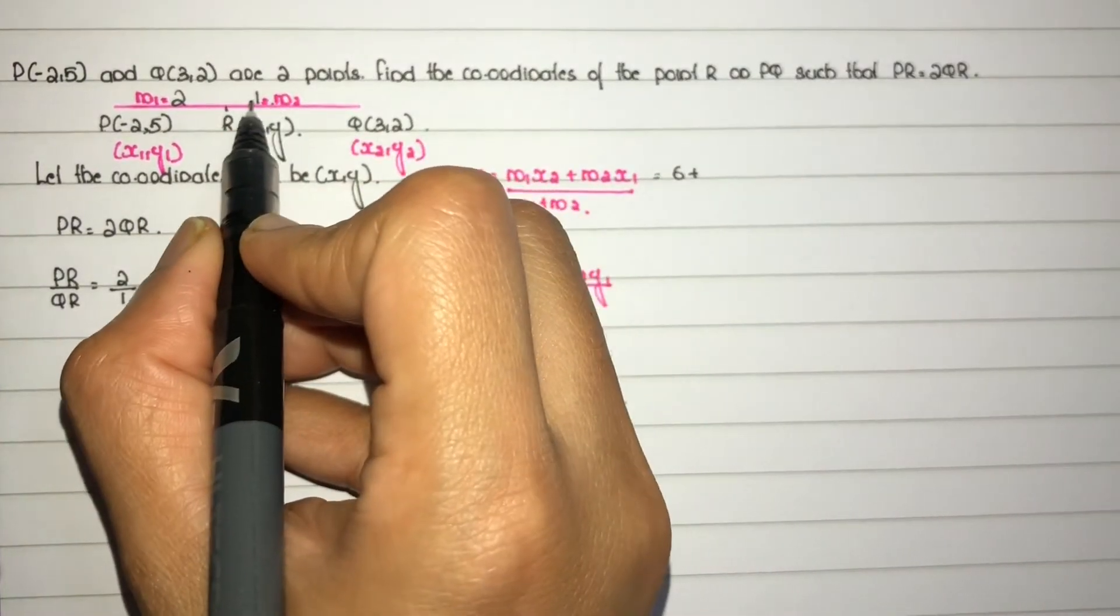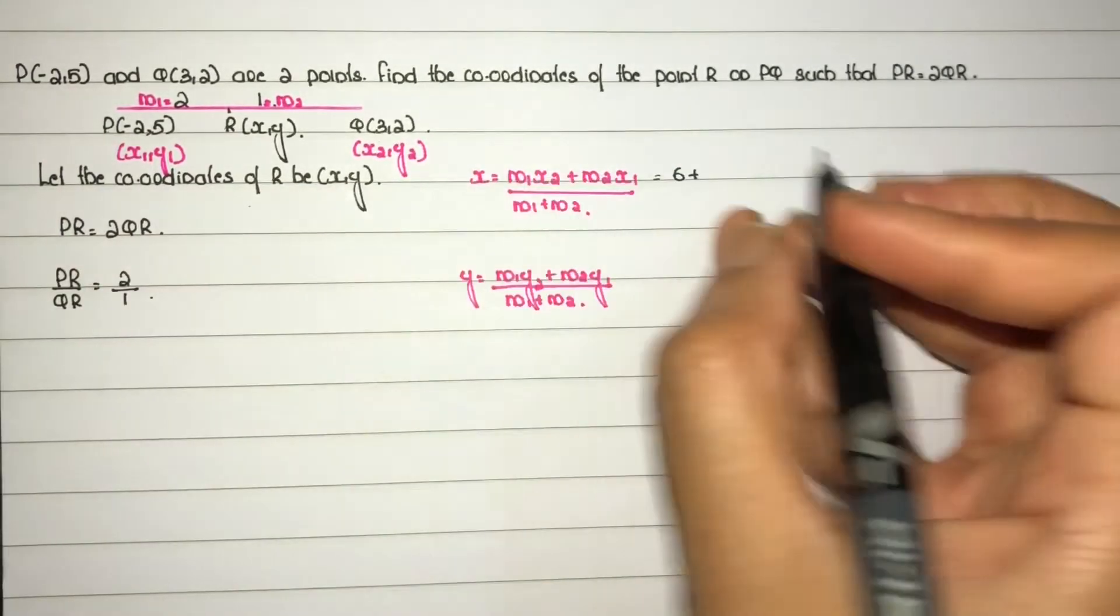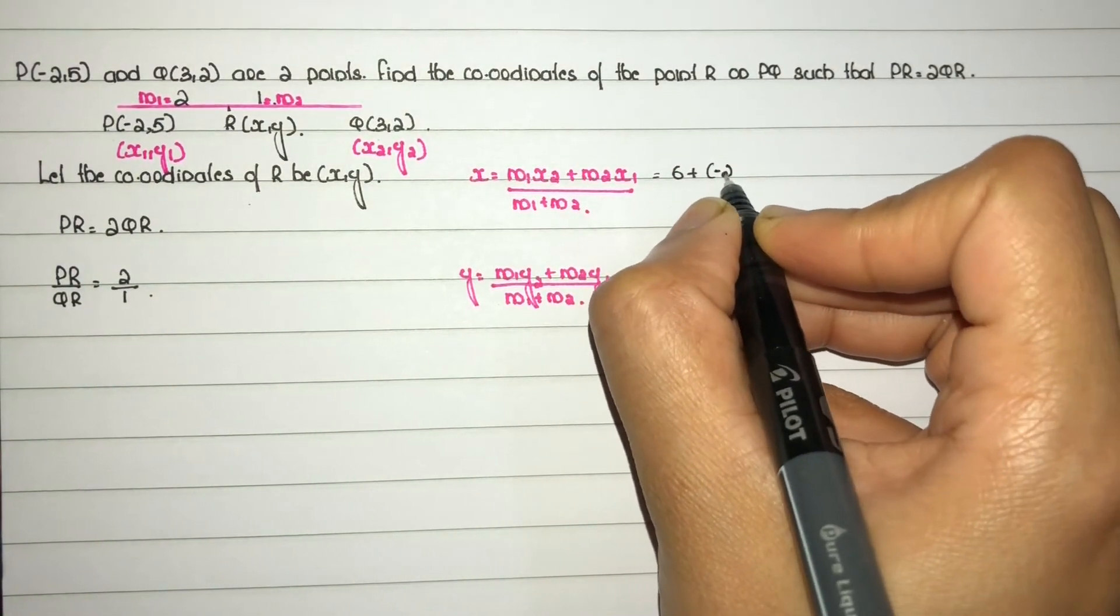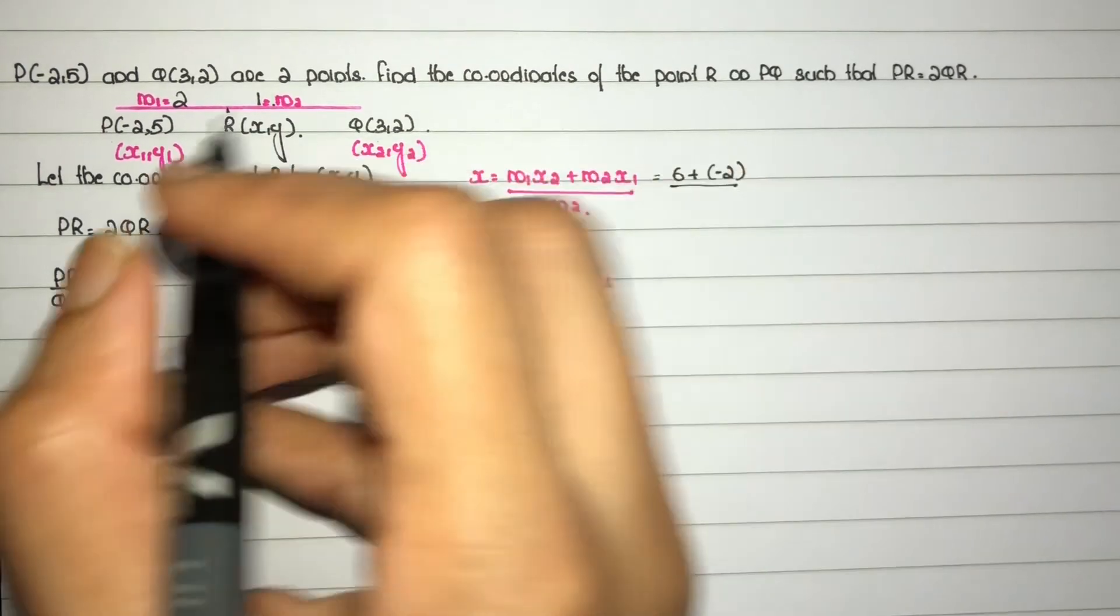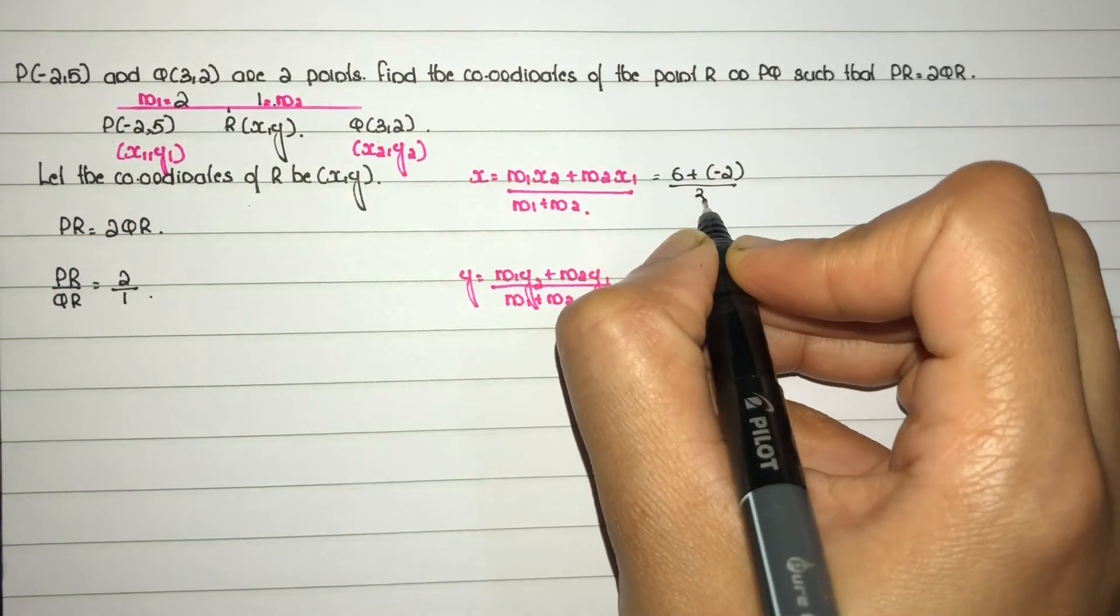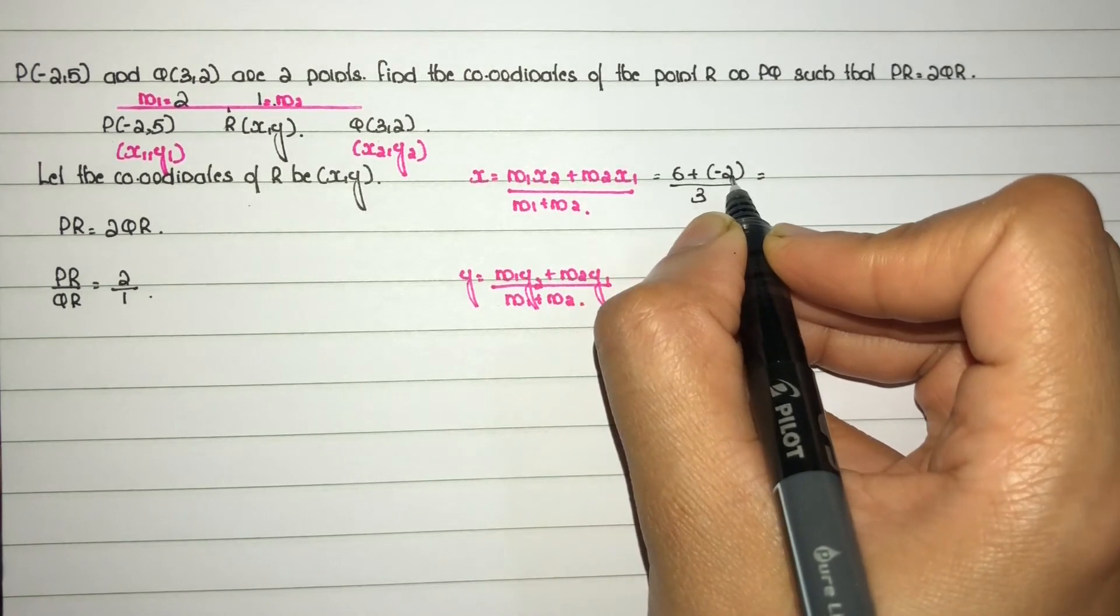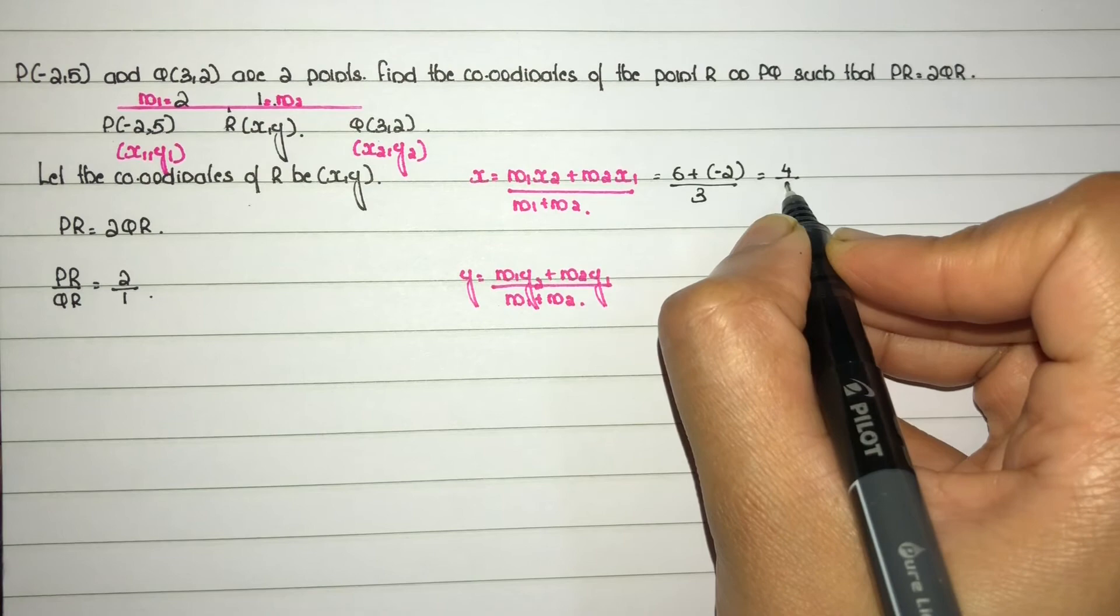Calculating x: m2·x1 where m2 is 1 and x1 is -2, giving -2. The full calculation is (6 - 2) divided by (2 + 1 = 3), which equals 4 by 3. So the x-coordinate is 4/3.